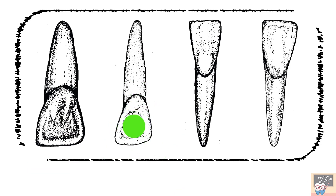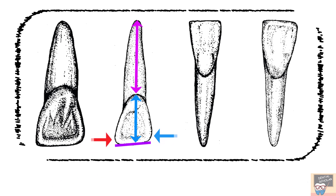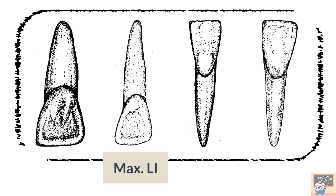In the next tooth, notice that the lingual fossa and cingulum appear more prominent as compared to the central incisor. The palatogingival groove may be seen at times and it is often associated with a lingual pit. Also notice the incisal angles, incisal edge, and crown to root ratio. All of these features indicate that this is a maxillary lateral incisor lingual view.